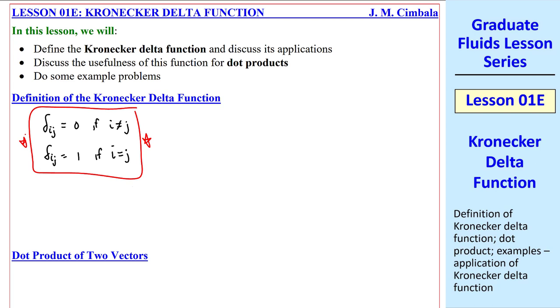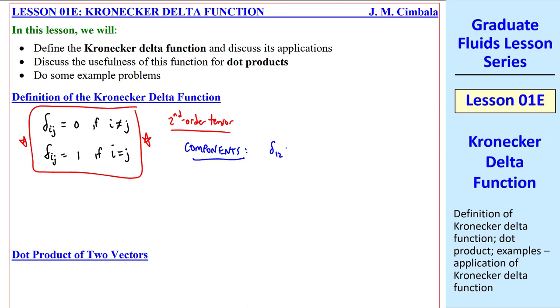That's the simple definition of the Kronecker Delta Function. It's a second-order tensor, since it has two free indices. If we look at individual components and expand this, the components are therefore delta 1,2 equal delta 1,3 equal delta 2,1 equal delta 2,3 equal delta 3,1 equal delta 3,2. All of those are 0, but delta 1,1, delta 2,2, and delta 3,3 are all 1.